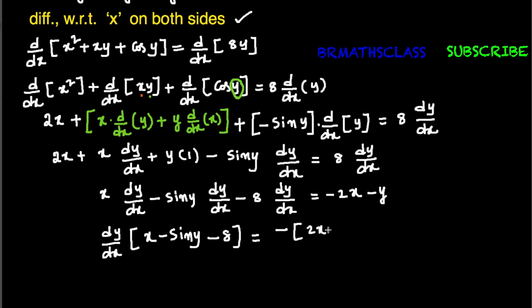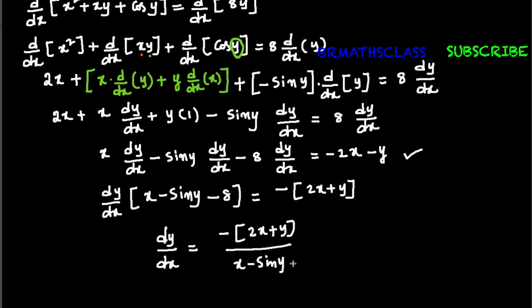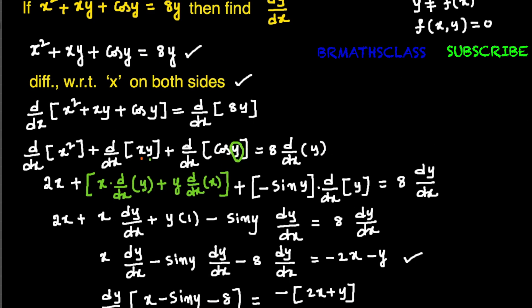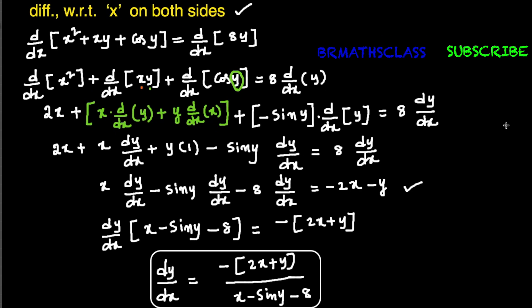On the right-hand side, taking minus common gives −(2x + y). From this, dy/dx = −(2x + y) / (x − sin y − 8). Therefore, if x² + xy + cos y = 8y, then dy/dx = −(2x + y) / (x − sin y − 8).